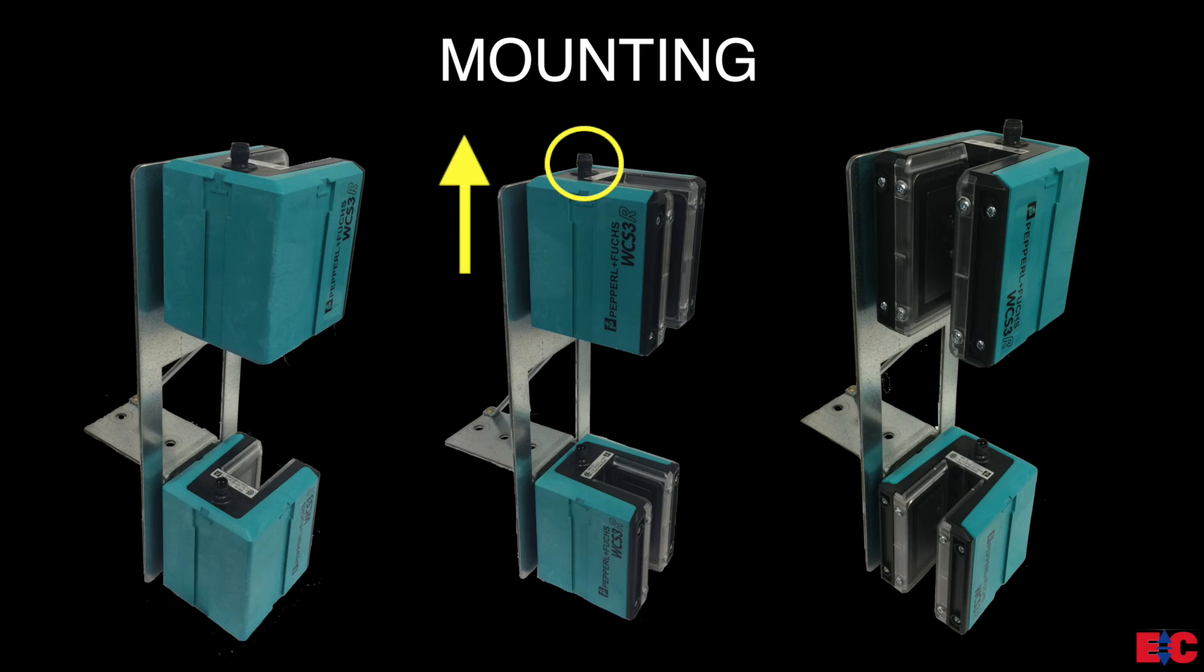Note that when placing the Lambda tape readers on the bracket, the wire harness connection must face upwards. And the tape readers can be mounted in 3 different configurations on the Lambda tape reader bracket.